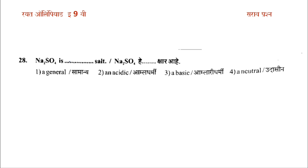Na2SO4 is what type of salt? The options are: option 1 is general (neutral), option 2 is acidic, option 3 is basic, option 4 is neutral. The answer is option 3 — Na2SO4 is a neutral salt (udhasin kshar).